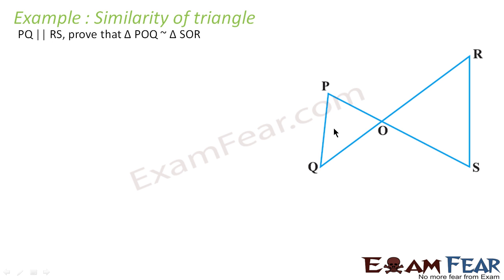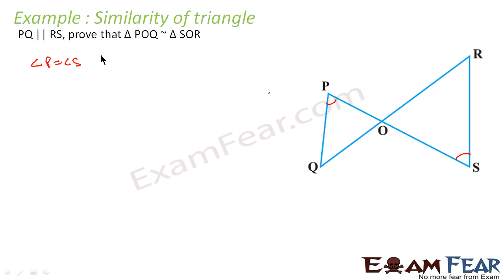The question says that PQ is parallel to RS. Since PQ is parallel to RS, we have to prove that triangle POQ is similar to triangle SOR. We can see that angle P is equal to angle S, since PQ is parallel to RS — alternate angles.